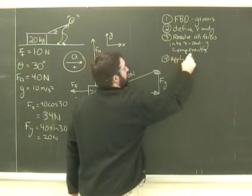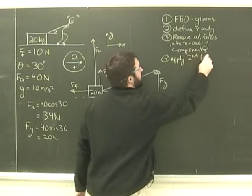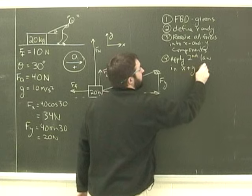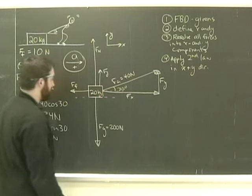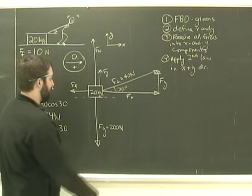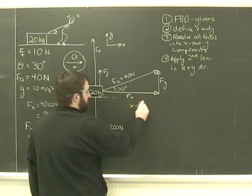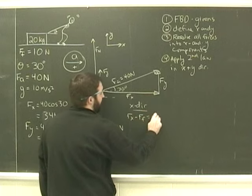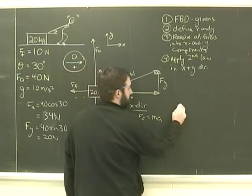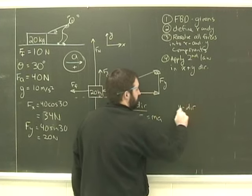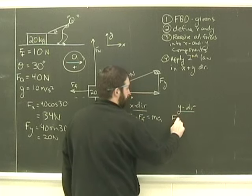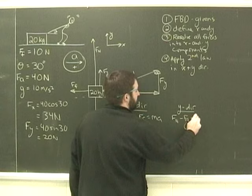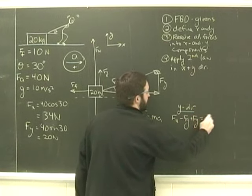Now all I've got to do is apply Newton's second law in both directions, in the x and y direction. So in the x direction, Fx minus Ff equals ma. In the y direction, Fn minus Fg plus Fy is equal to zero.